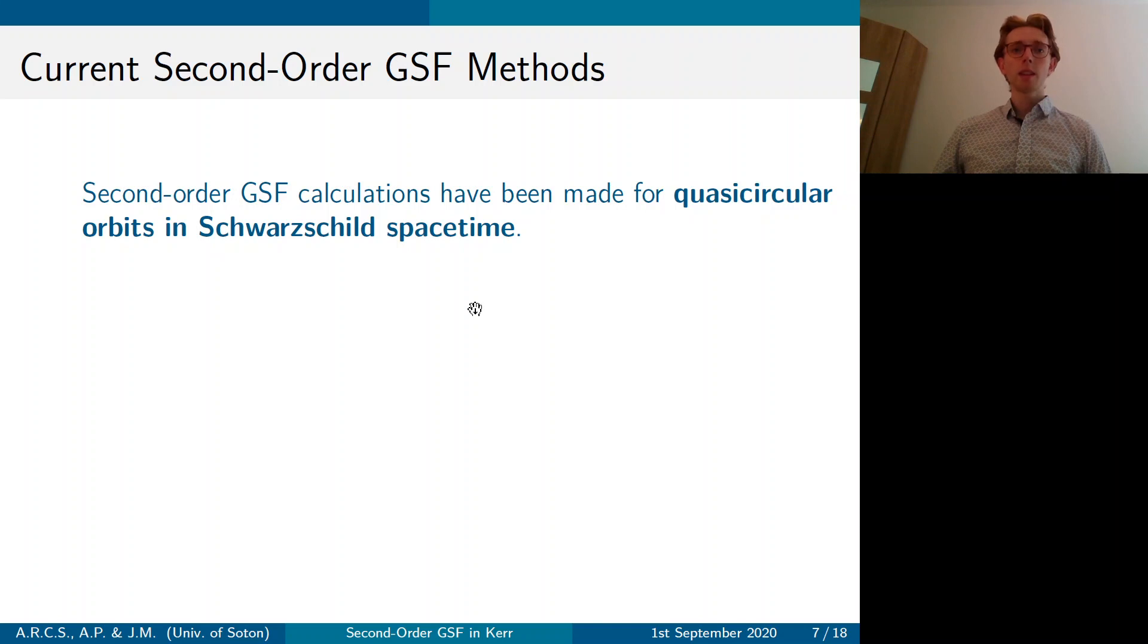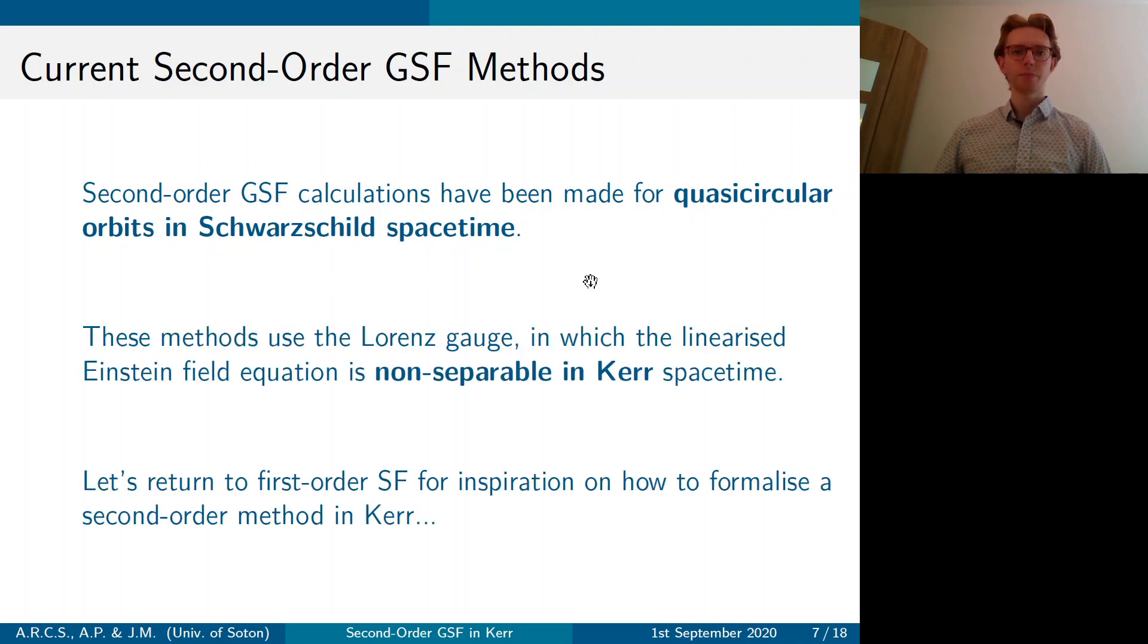So currently, second order is in its infancy stage in terms of calculations. But recently, quasi-circular orbits in Schwarzschild have been modeled. They have modeled the self-force in this arrangement. But this method uses the fact that in Schwarzschild, in the Lorenz gauge, the Einstein field equations are separable.